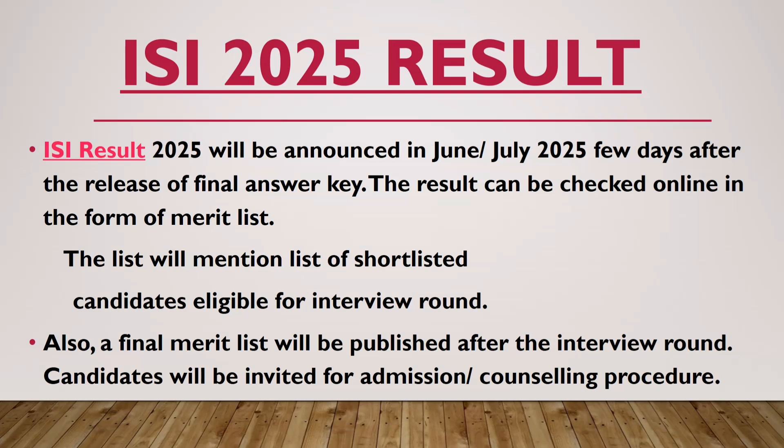ISI 2025 Result: The ISI result 2025 will be announced in June or July 2025, a few days after the release of the final answer key. The result can be checked online in the form of a merit list, which will mention the shortlisted candidates eligible for the interview round. A final merit list will be published after the interview round, and candidates will be invited for the admission or counselling procedure.